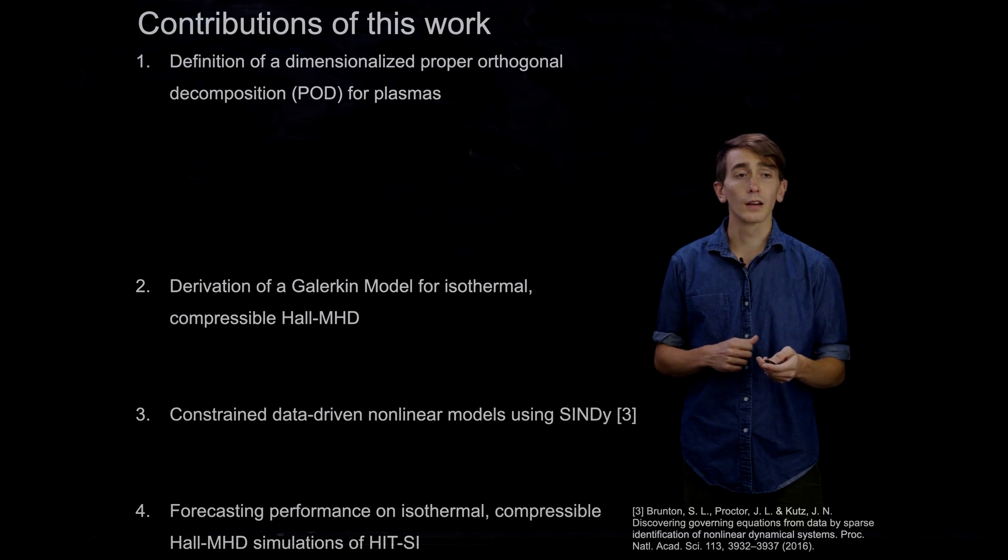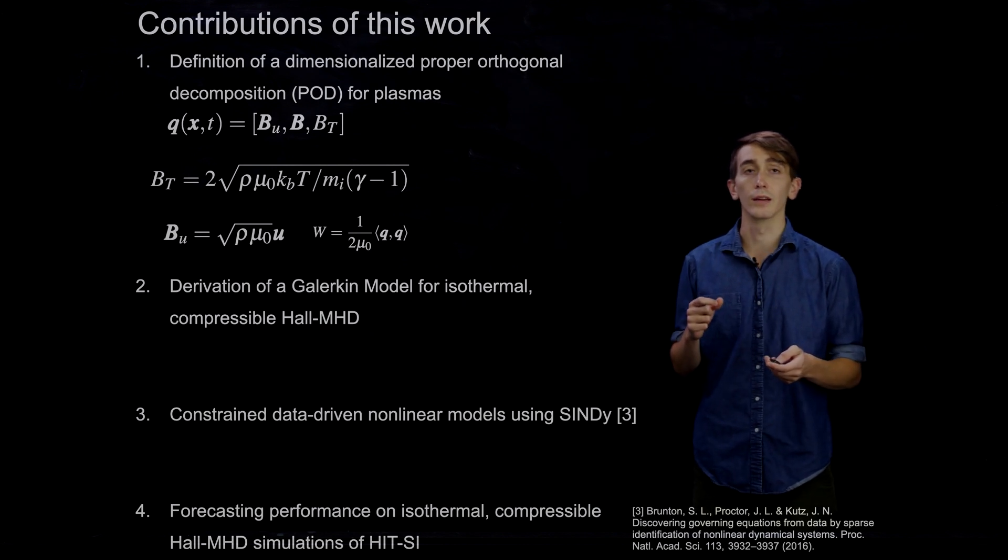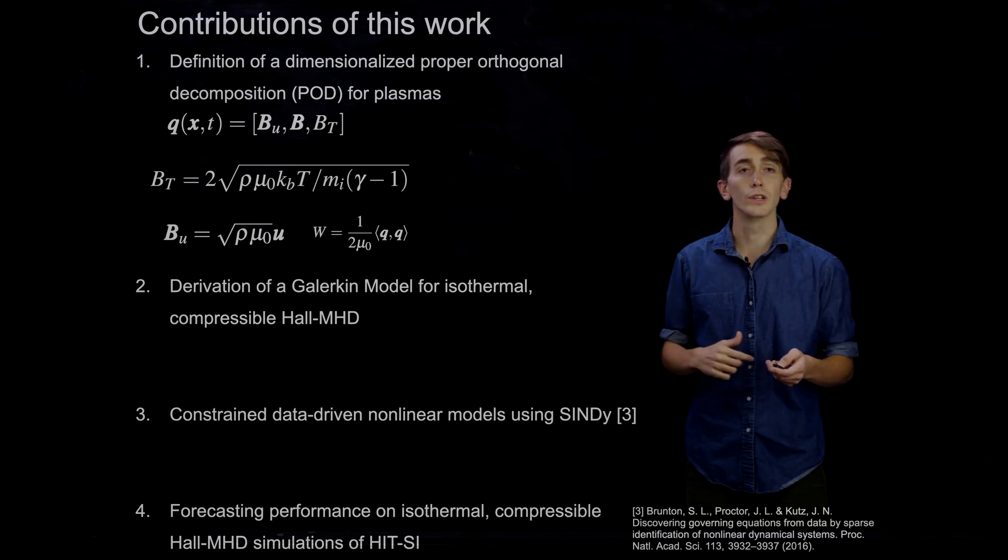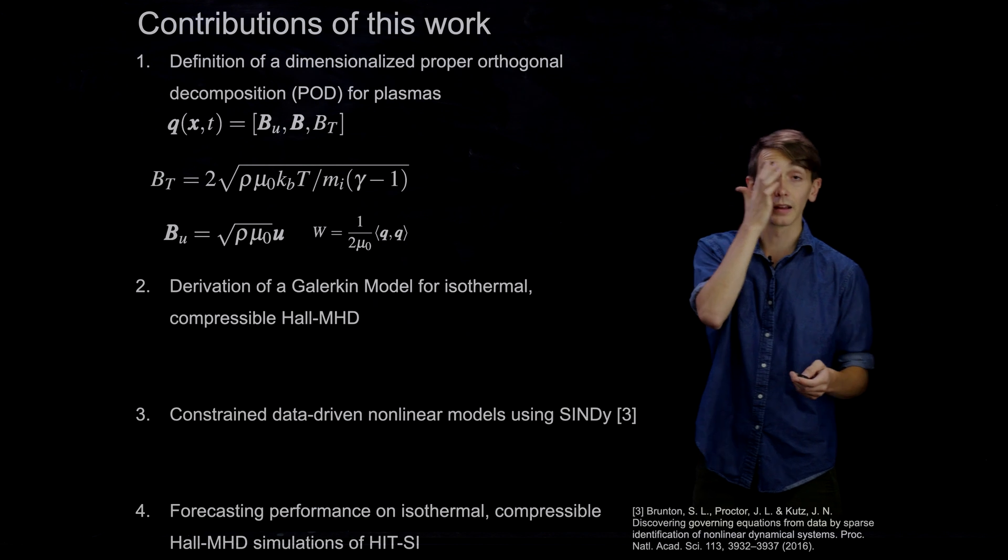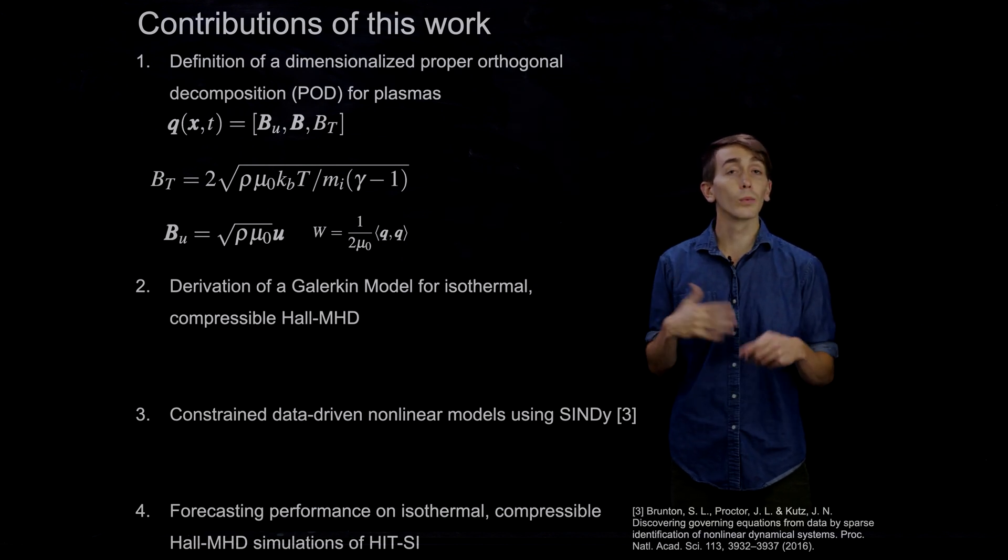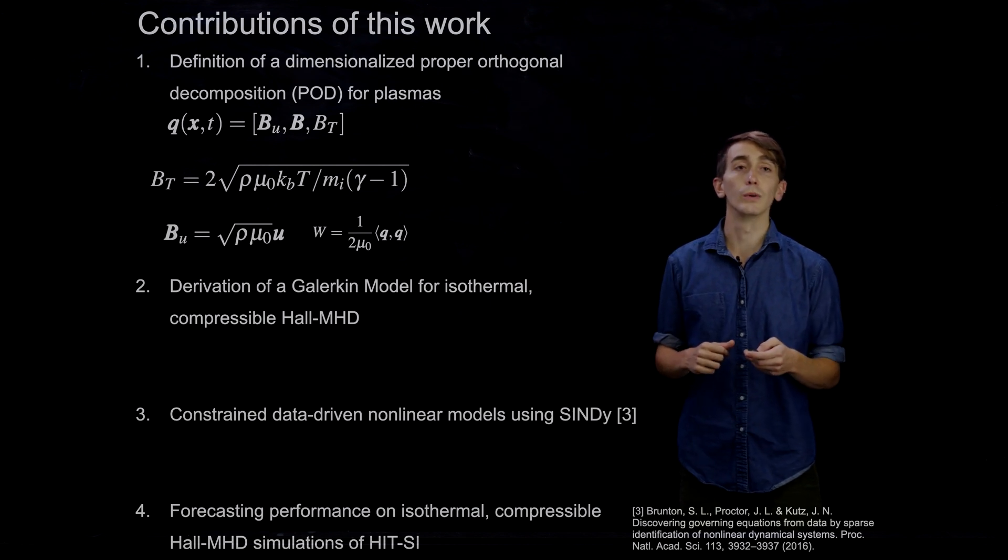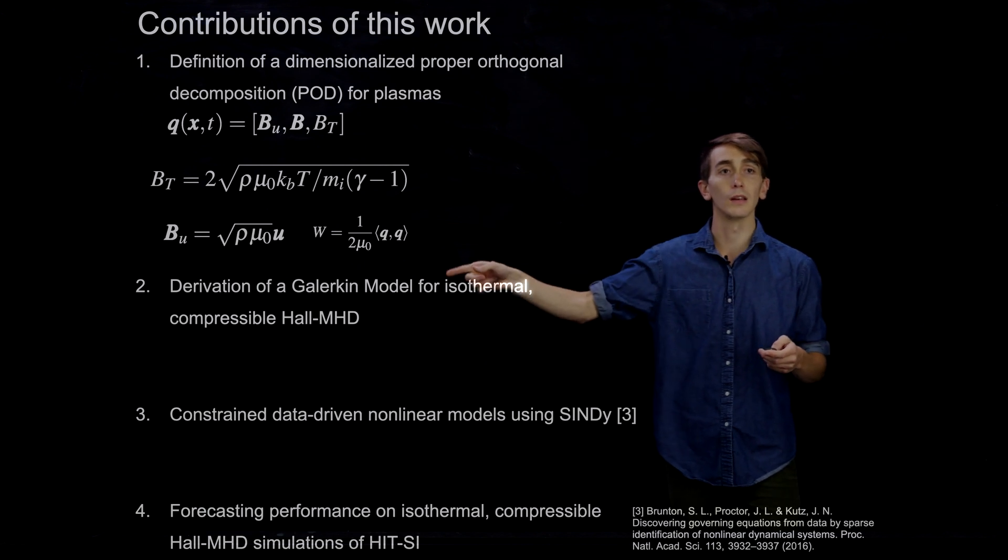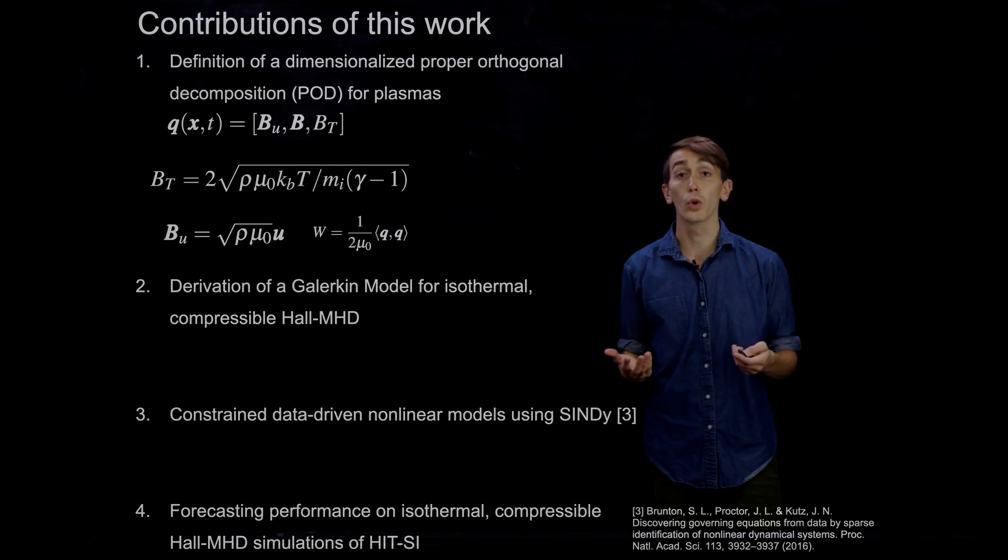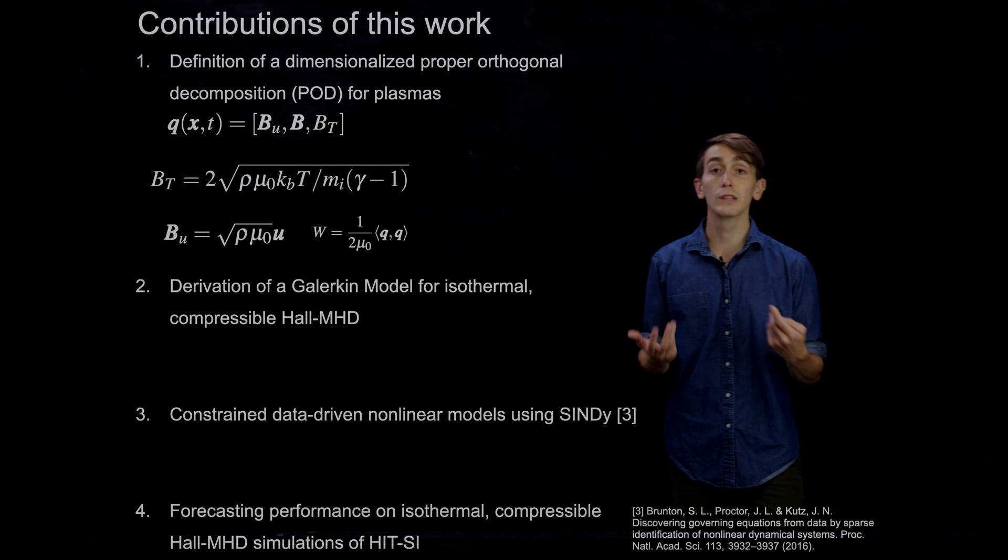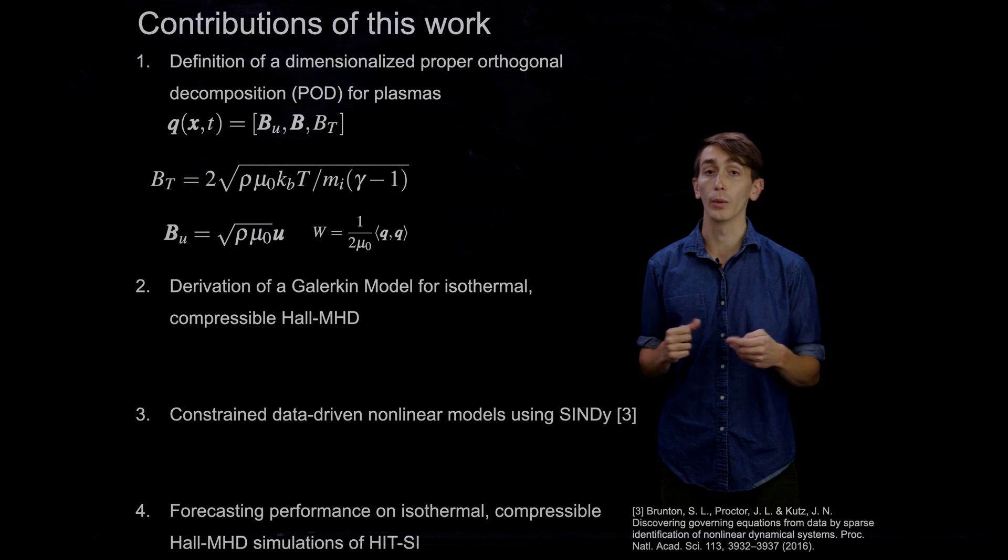So to get into the nuts and bolts here a little bit, what we're going to do is define maybe a not so obvious thing. So we have this vector Q up here, which is the velocity, magnetic field, and temperature, which are the fields you would typically evolve in a magnetohydrodynamic model. And all we've done is put them all into a single vector Q and we've normalized them to magnetic field units. And if you want the exact definitions, I've written them down here and here. And then you can notice something interesting about inner products with Q with itself, which is that it's proportional to the total plasma energy. And in fact, we use that later to constrain the structure of the model we derive with a power balance argument.